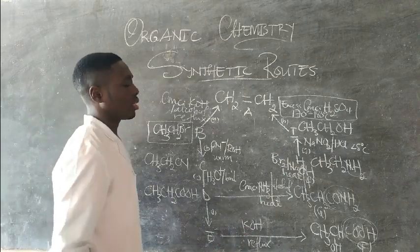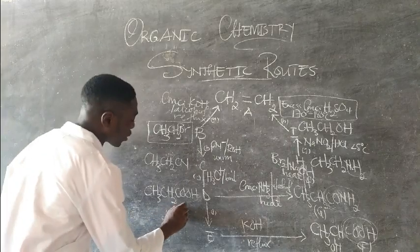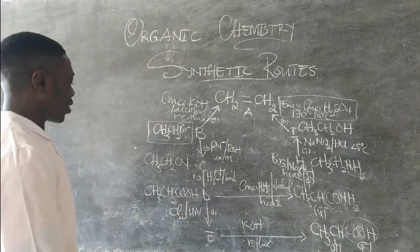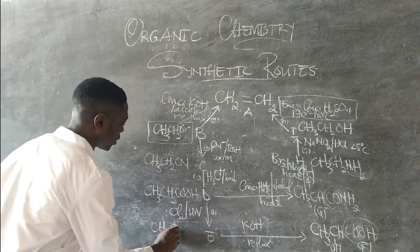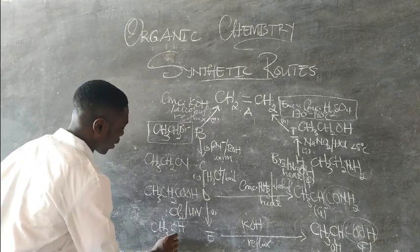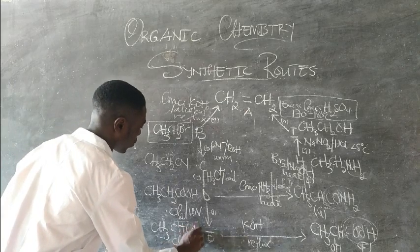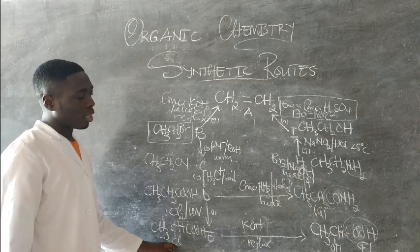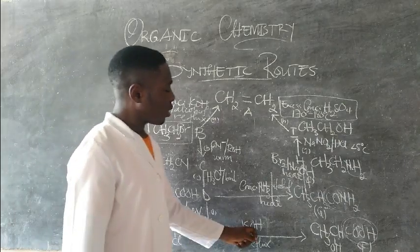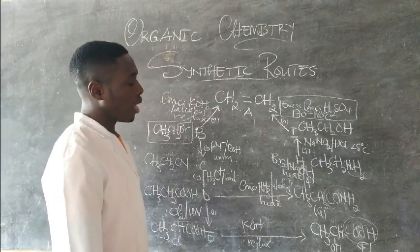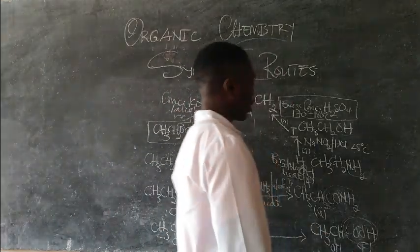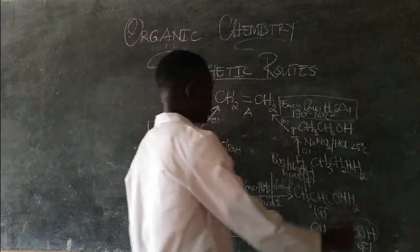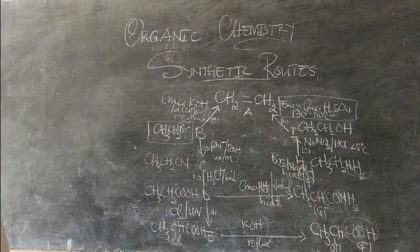So I add chlorine in UV light — and this example is going to help you in the JC 2009 paper. Chlorine in UV light substitutes one of the hydrogen atoms on the side chain, giving CH₃CHClCOOH. When I then add potassium hydroxide, the OH replaces the Cl through nucleophilic substitution to give 2-hydroxypropanoic acid. This 2-hydroxypropanoic acid is what we call lactic acid in biology. That is how simple the synthetic routes are — it is the same thing over and over.